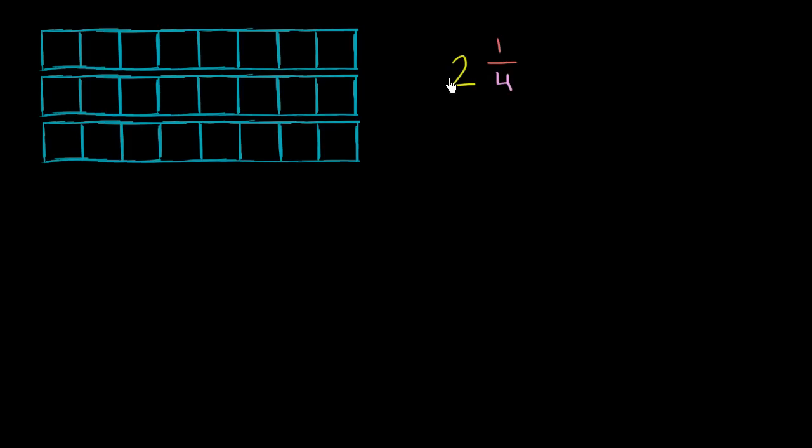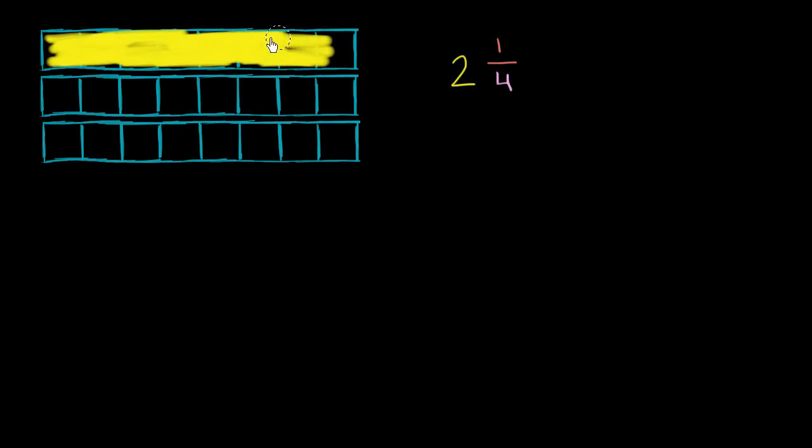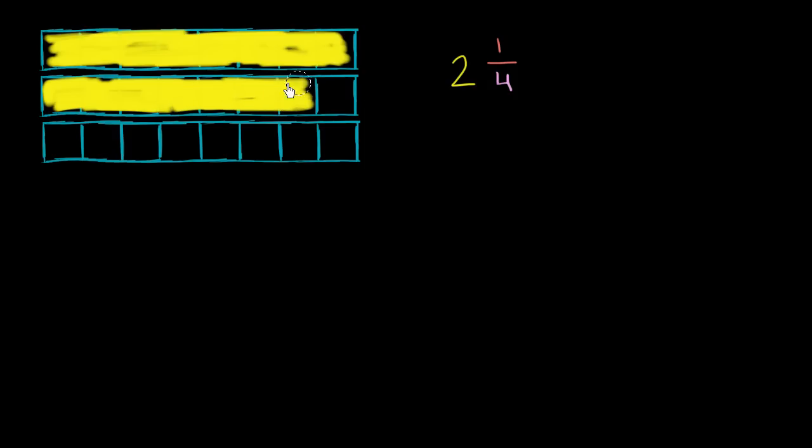So let's first think about the whole number part, the 2. The 2 is literally two wholes. Right here, we've drawn each hole, we've cut it up into sections of 8, so it literally is 8/8. So the 2 is this whole region right over here. That's 1. And then this right over here is 2, 2 holes.